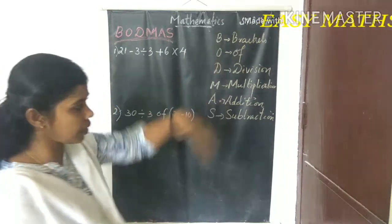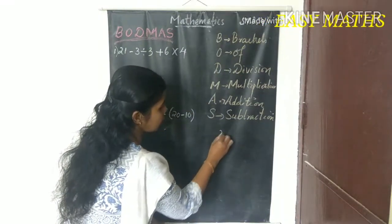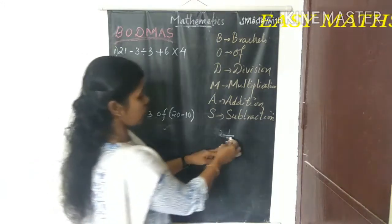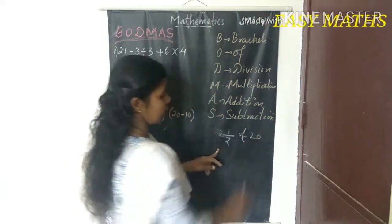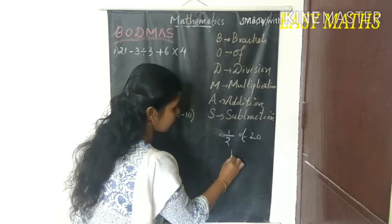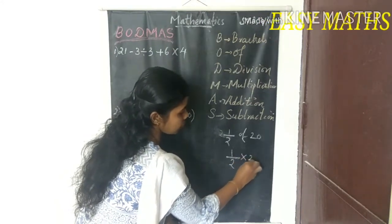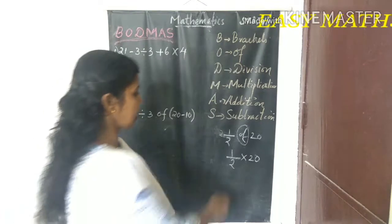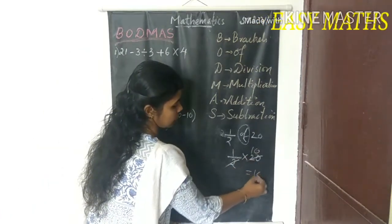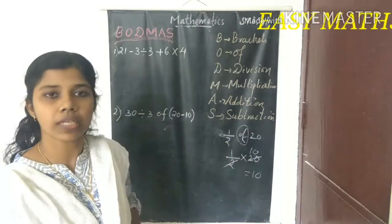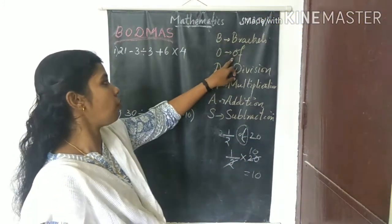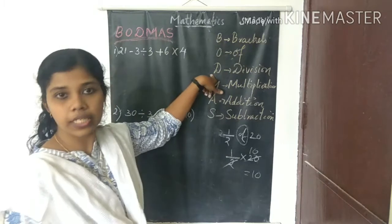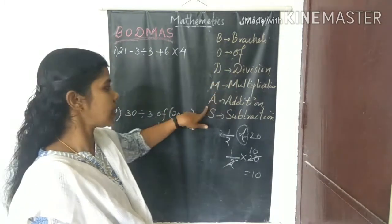B denotes brackets, and also denotes the 'of' function. For example, what is 1/2 of 20? We learned the 'of' function in our fourth standard. 1/2 of 20 means 1/2 into 20, which equals 10. So 'of' is transformed to multiplication.